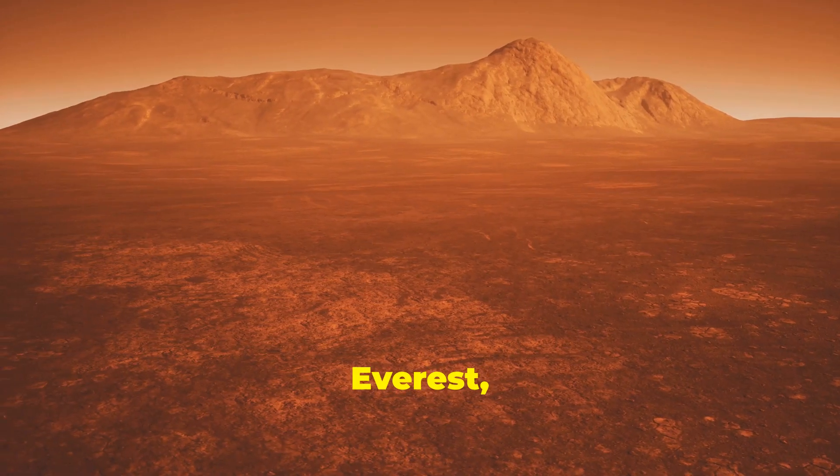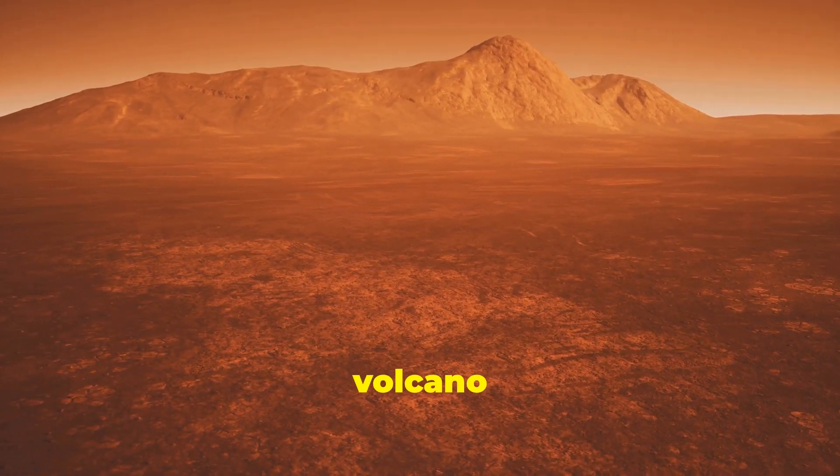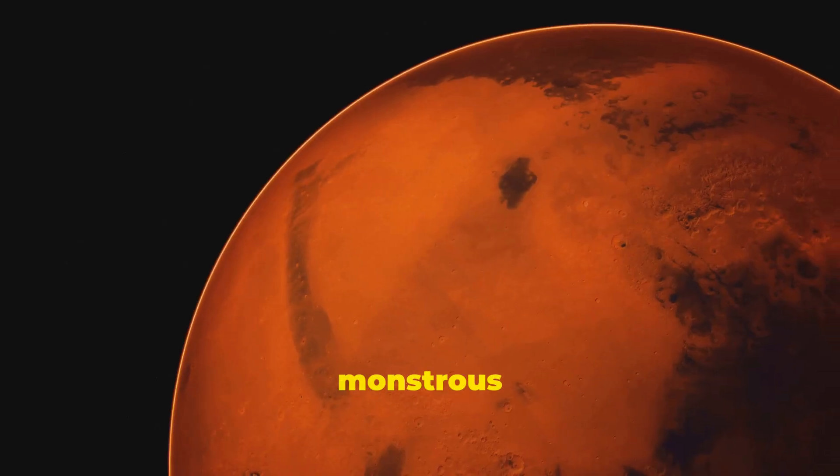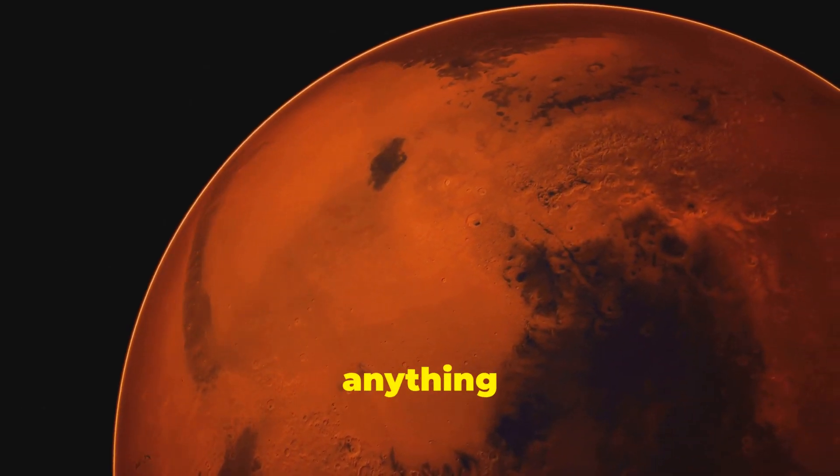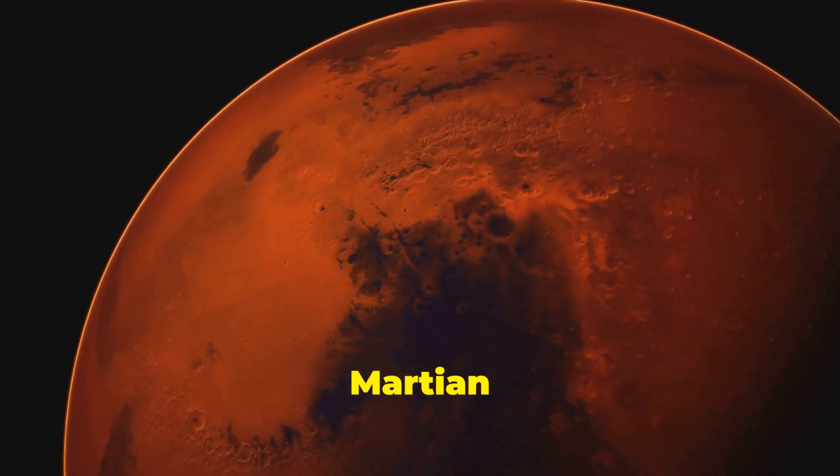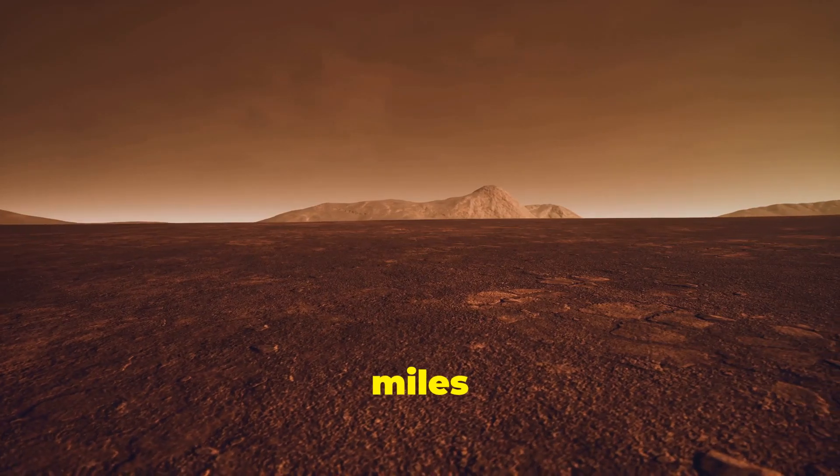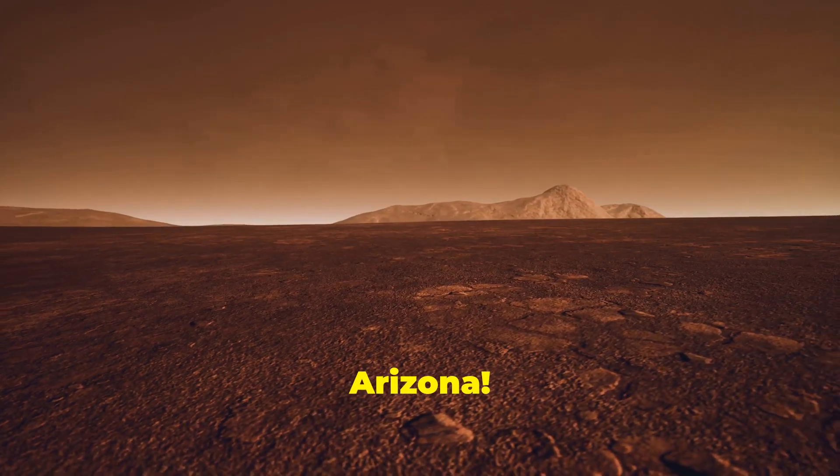Move over Mount Everest because Mars is home to the largest volcano in our solar system, Olympus Mons. This monstrous shield volcano dwarfs anything found on Earth, towering over the Martian surface at a staggering 16 miles high and spanning an area roughly the size of Arizona.